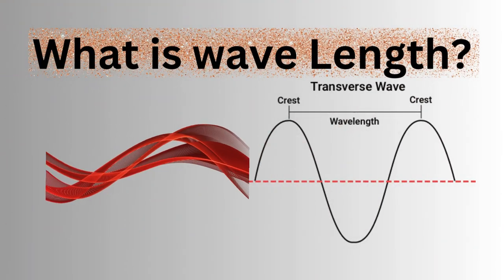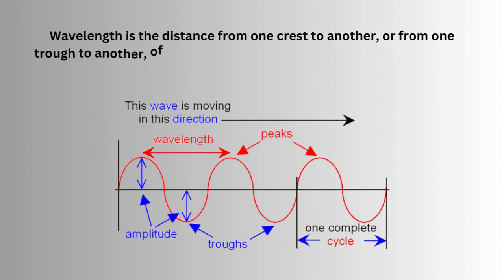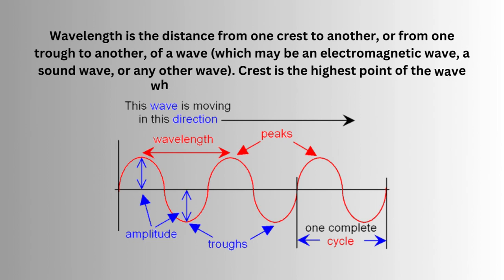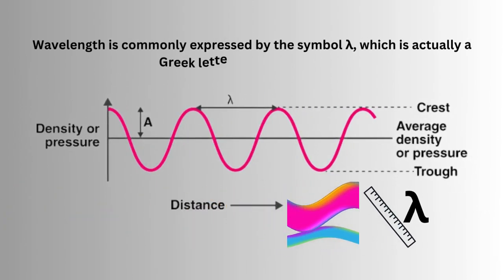What is wavelength? Wavelength is the distance from one crest to another, or from one trough to another, of a wave, which may be an electromagnetic wave, a sound wave, or any other wave. The crest is the highest point of the wave whereas the trough is the lowest. Wavelength is commonly expressed by the symbol lambda, which is a Greek letter.